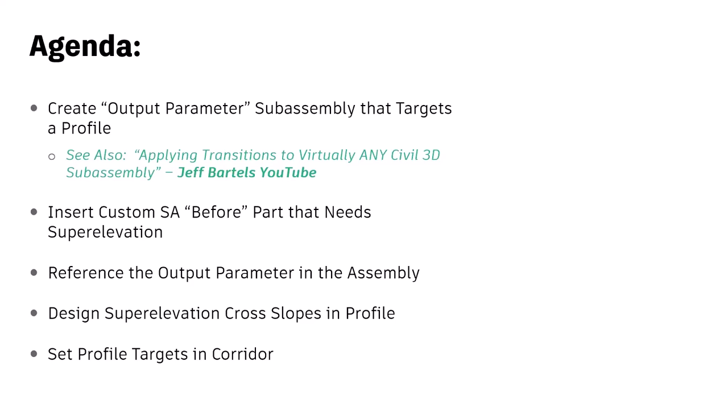This custom subassembly contains no geometry — it's just a number generator. After the assembly is good to go, we need some profile data. We're going to design cross slope and station, just like the superelevation view in Civil 3D, but using station and cross slope instead of station elevation. We'll pass those cross slopes into the subassembly through our custom subassembly. Finally, we need to tell the corridor to target that new profile we design as the superelevation profile.